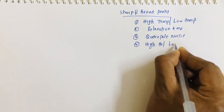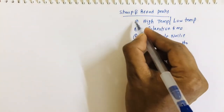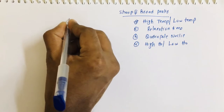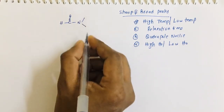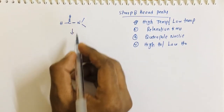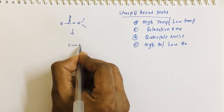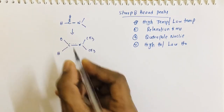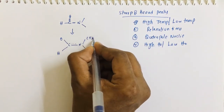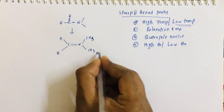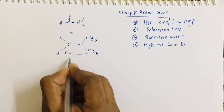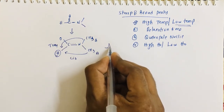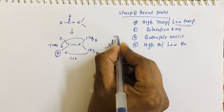The best example for high temperature and magnetic field effects is DMF. In DMF there is generation of a partial double bond character between the carbon and nitrogen. At low temperature, we can differentiate both methyl groups because one methyl group is cis to the hydrogen and the other is trans. So we get three lines — two for the methyl groups and one for the hydrogen.